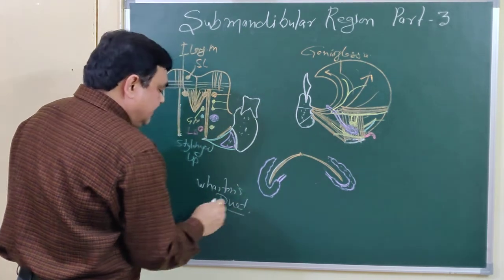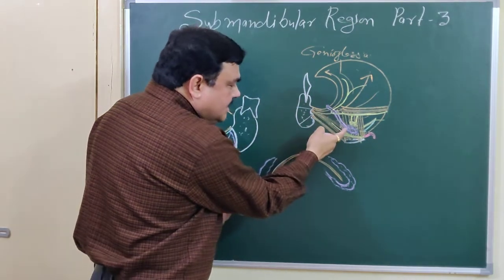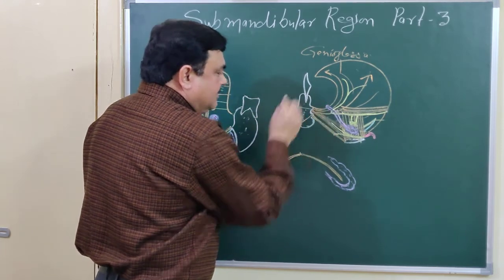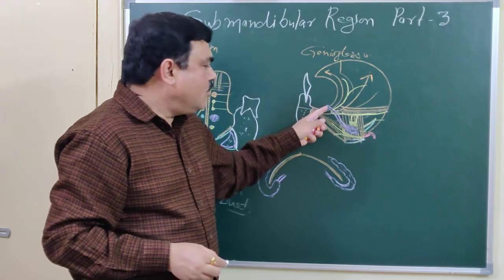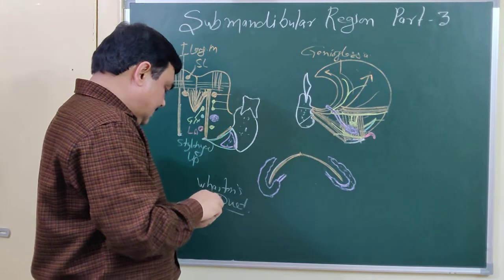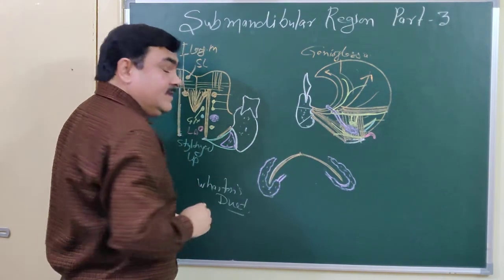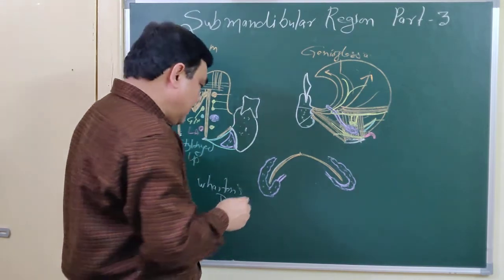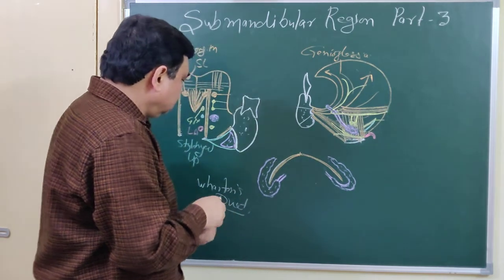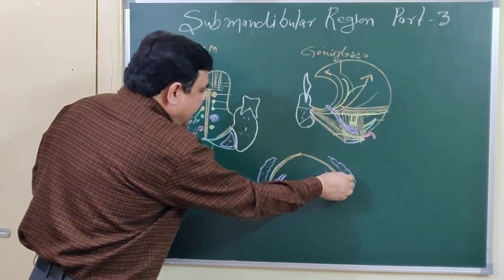Wharton's duct has a length of five centimeters. It courses upward, then forward, and opens into the floor of the mouth at the summit of the sublingual papilla. The nature of this gland is mixed — it has both mucous and serous components.